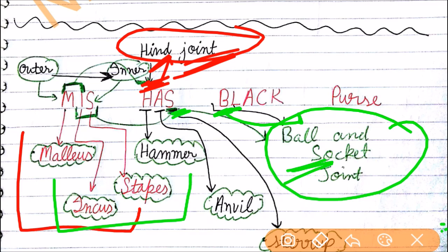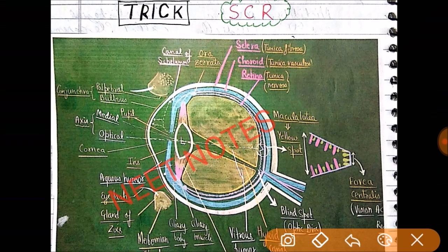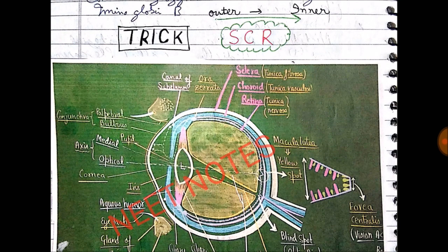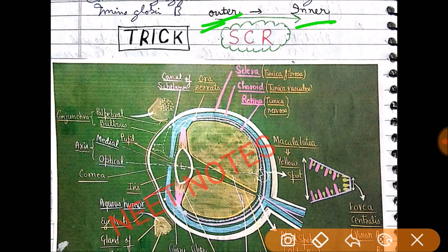So this was the trick for human ear. Now let's see the trick for human eye, which is also very simple. Here you just need to remember SCR. Basically there are three kinds of layer which are present in human eye, and they are sclera, choroid, and retina. Sclera is outermost layer and innermost layer is retina.